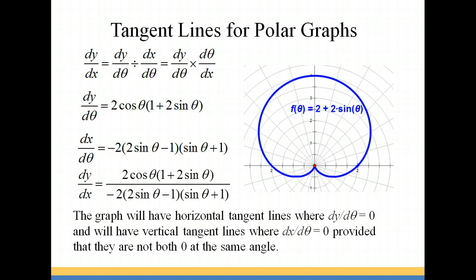For our vertical tangent lines, that's going to be where dy/dx is undefined, or where it goes to infinity. And that's going to be where our denominator is equal to 0, or where dx/dθ is equal to 0. Now that holds true as long as we don't have zeros in both numerator and denominator. We will have critical points at those values, but we can't decide whether it's going to be a horizontal or vertical tangent line. At the end of this video, we're going to look at that in detail.